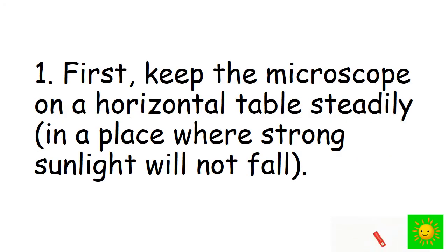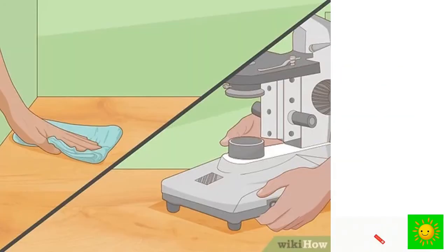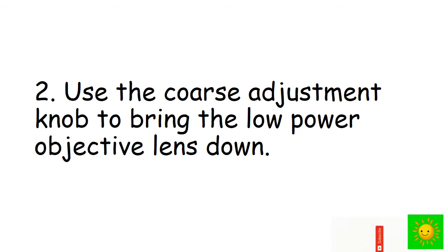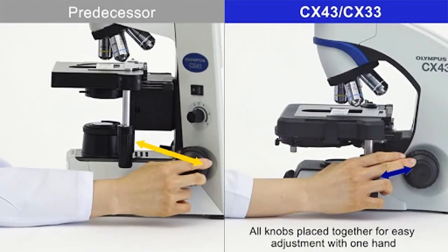First of all, keep the microscope on a horizontal table, steady, in a place where strong light will not fall. Like this. Use the coarse adjustment knob to bring the low power objective lens down.